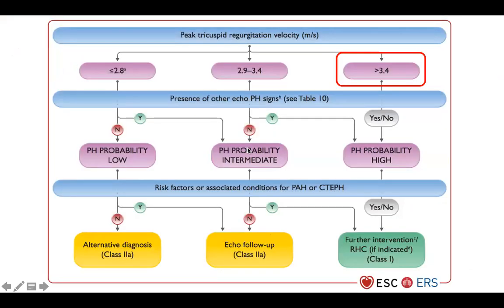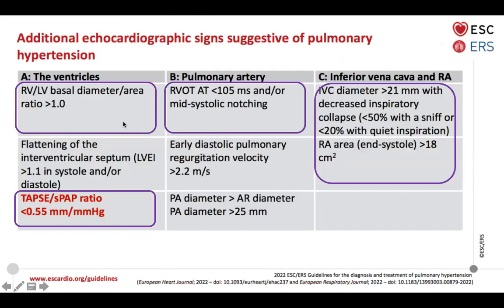Back to the algorithm from the guidelines: this patient had a tricuspid regurgitant velocity of 4 m/s, so she is already high probability and should undergo right heart catheterization without needing additional echo signs. Additional echo signs she had include: RV-to-LV ratio greater than 1, TAPSE/SPAP ratio less than 0.55 (it was 0.3), midsystolic notching with acceleration time of 103 ms, dilated incompressible IVC, and a right atrial area of 19 cm². Therefore, the next best step is an invasive right heart catheterization.